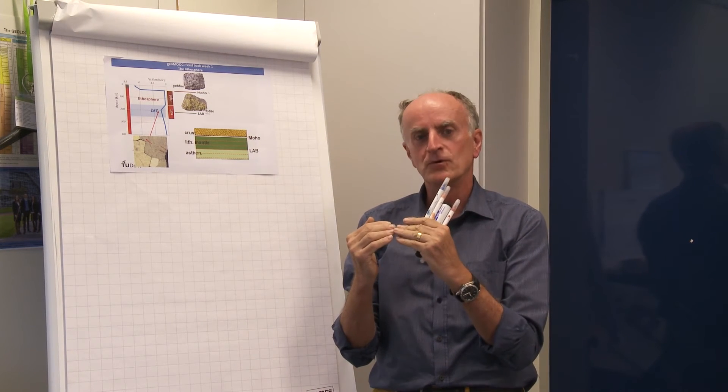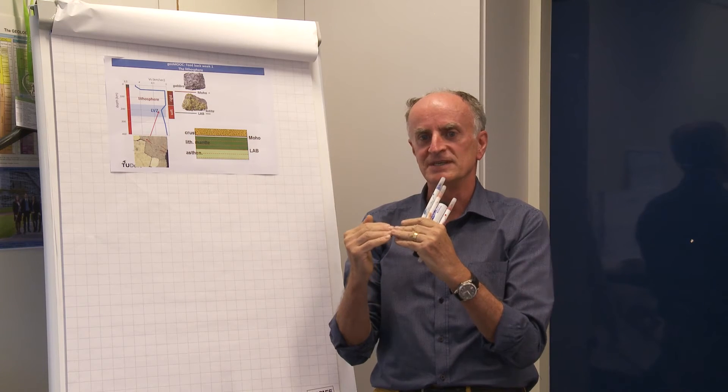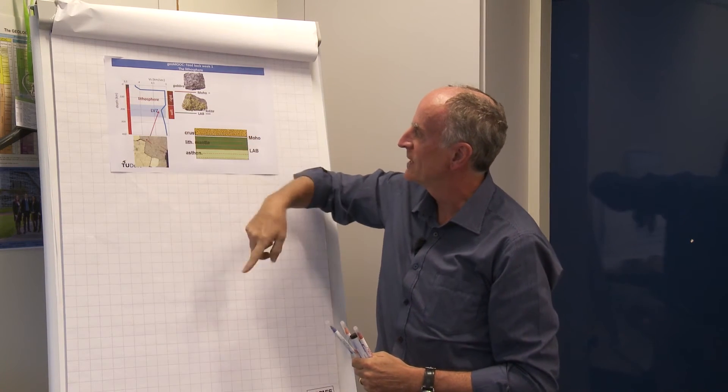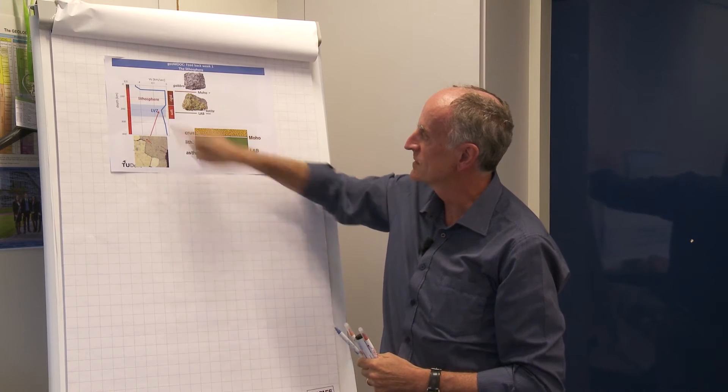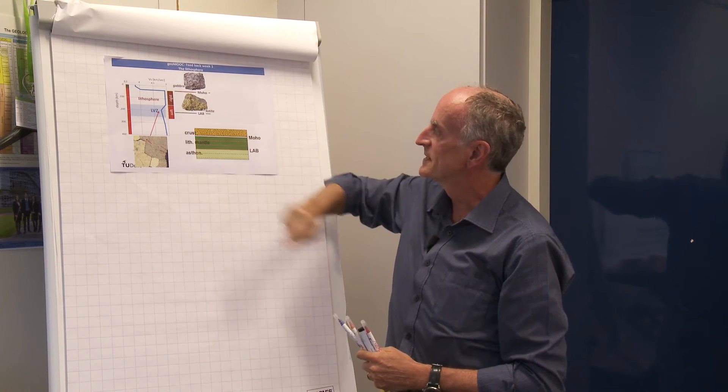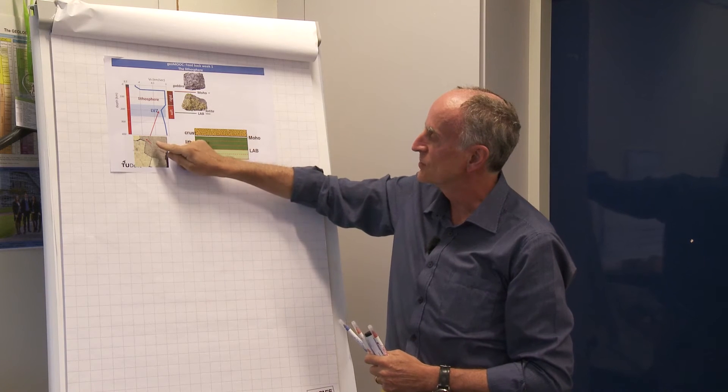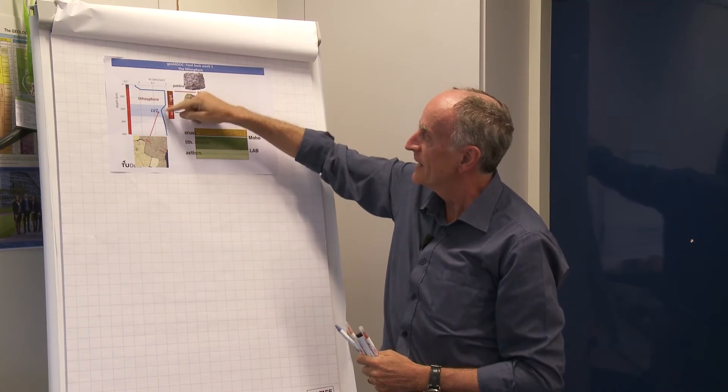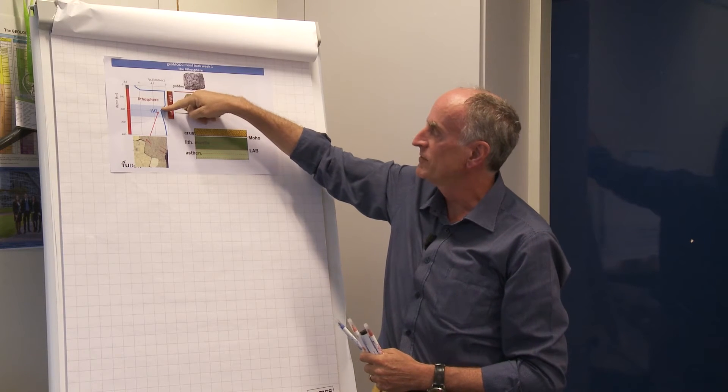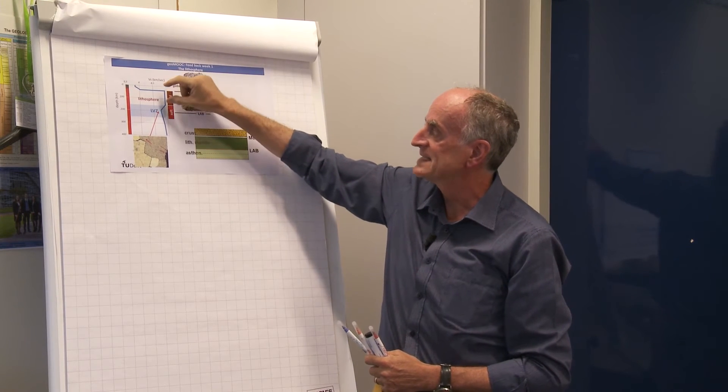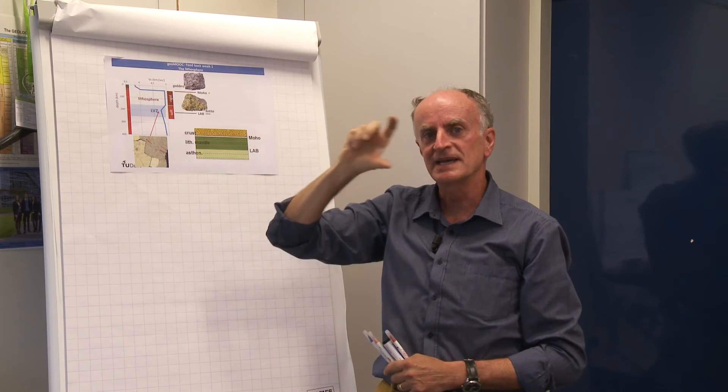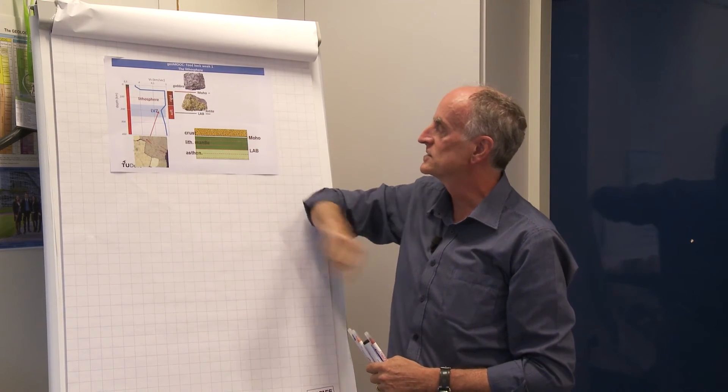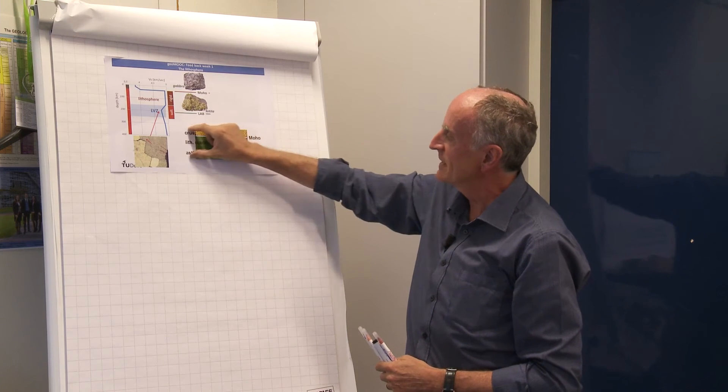We have seen that above the core mantle boundary, seismic velocity decreases, and at a certain moment arriving at depths of about 200 kilometers, there is a low velocity zone. We said that this low velocity zone is caused by the appearance of a bit of melt between the grains. The layer of rocks above the low velocity zone is defined as lithosphere. This is a kind of rigid lid on top of the softer low velocity zone.